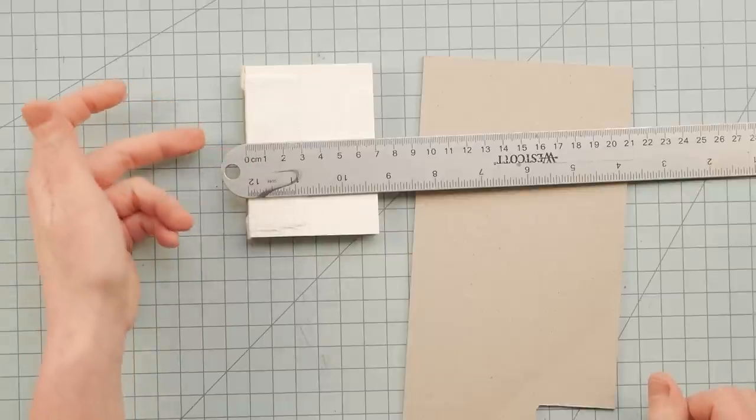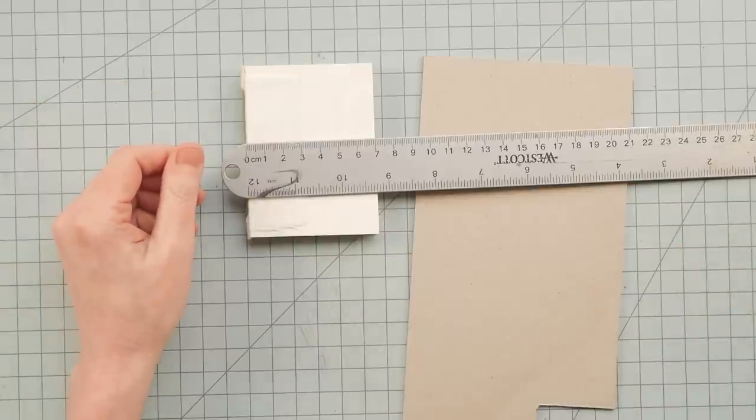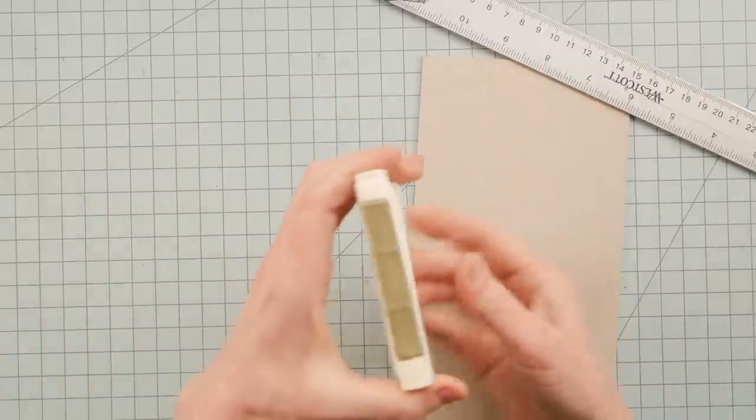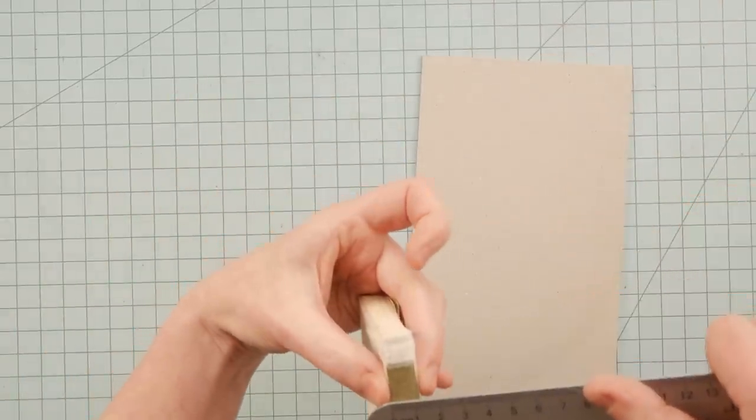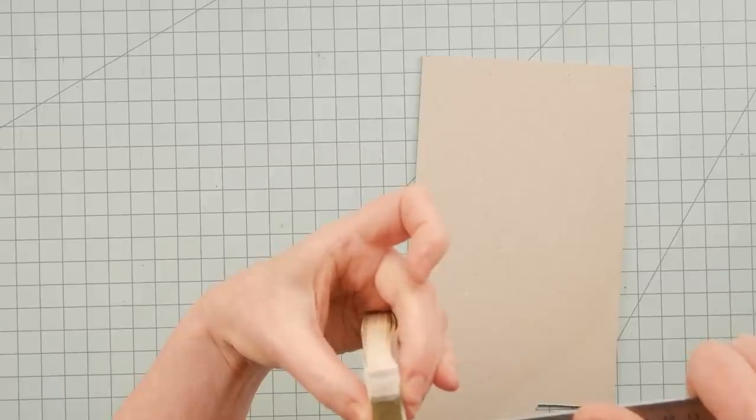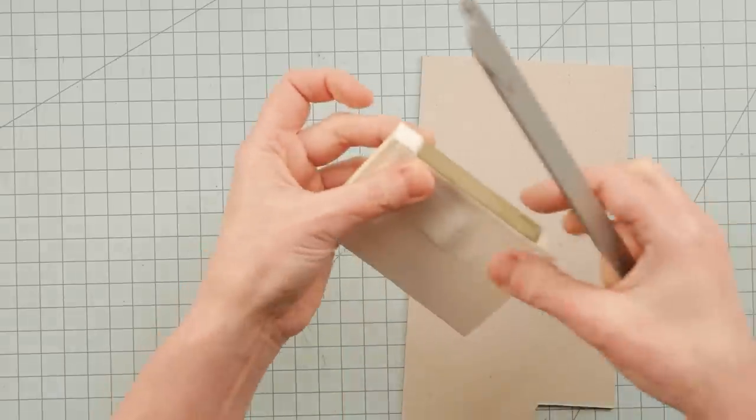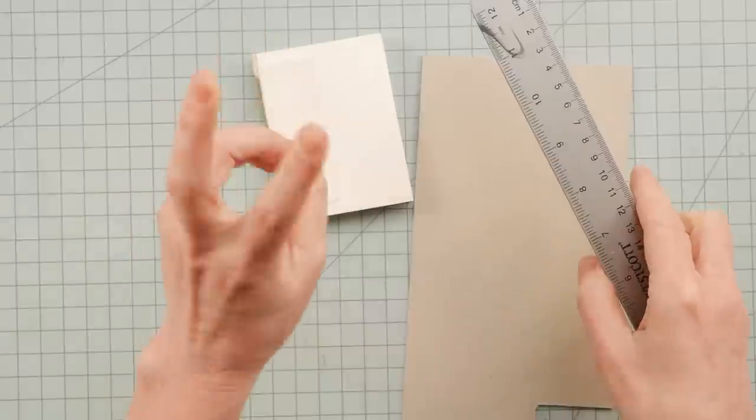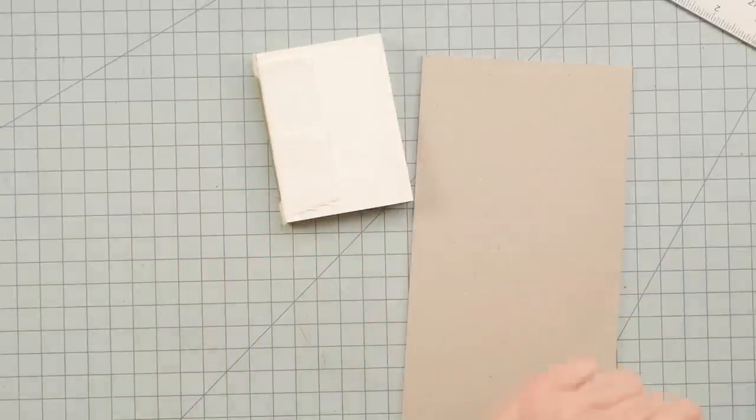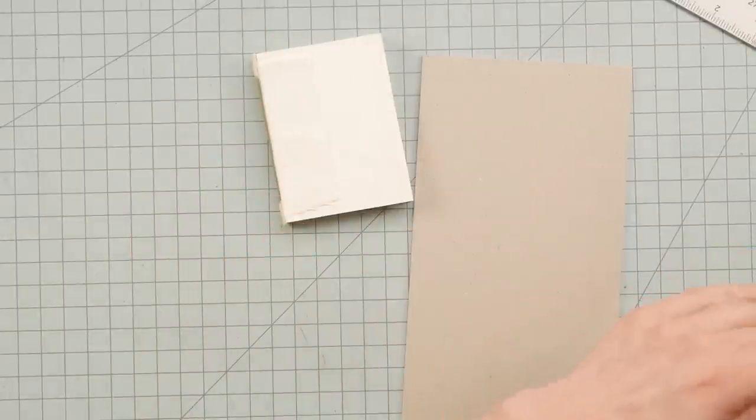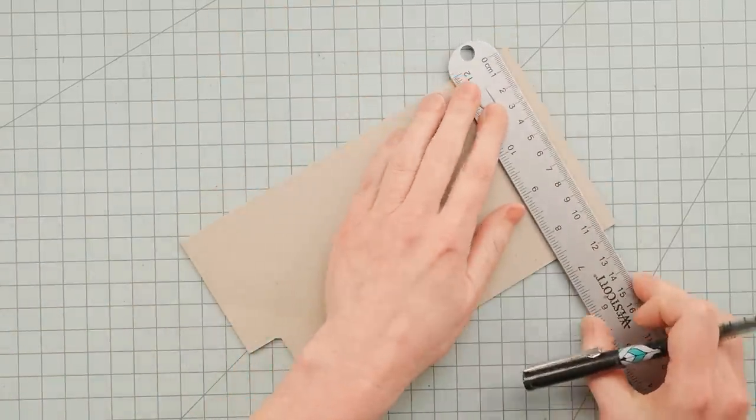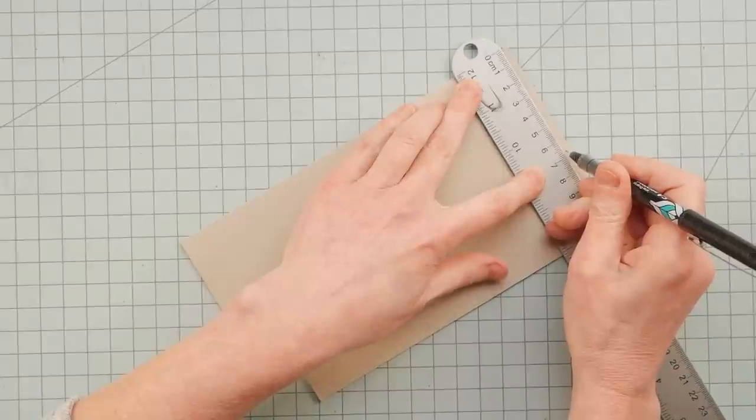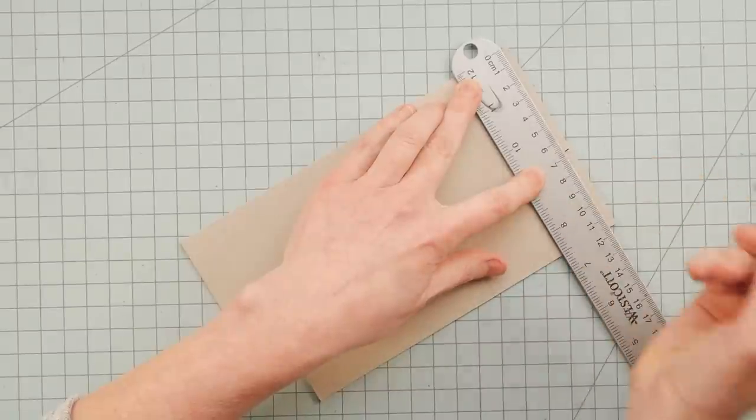98 will be the height. As far as the width goes, the book block is 70 millimeters wide. So I'm going to take off 3 millimeters from that, which is 67. And I'll show you why. And then as far as the spine goes, the width of the book block is about 13. So I'm going to add 2 millimeters to that. And that will be 15. So I said 67 for the width, right? Which is right there.